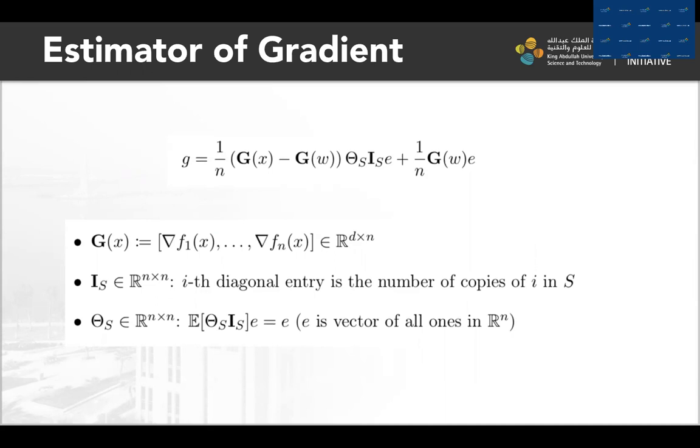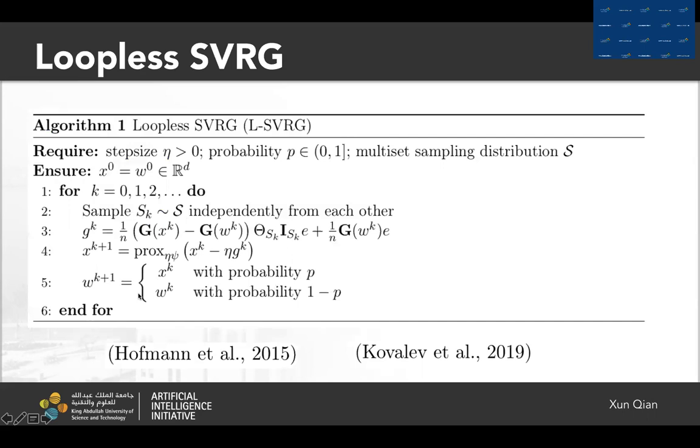For any sampling, we construct vector G to estimate the gradient. Here I_S and theta_S are both diagonal matrices and theta_S needs to satisfy this property to ensure the vector G to be an unbiased estimator.